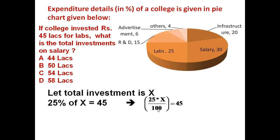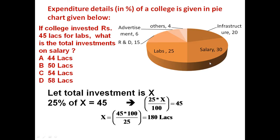So, 25 × X ÷ 100 = 45 lakhs. It gives X = 180 lakhs. It means the total investment by the college is Rs. 180 lakhs on various activities.